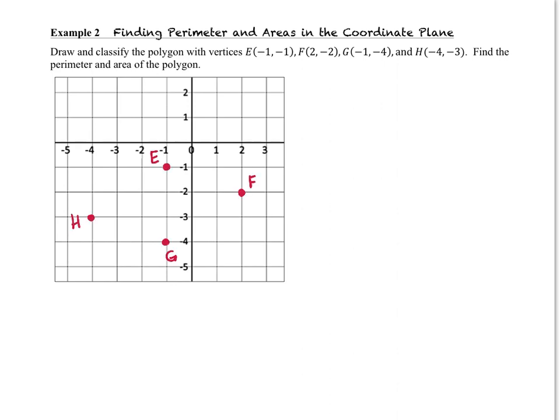Now that we've got the points, draw segments between them. Now that we've got our figure drawn, we can check out the type of figure that it is because we need to draw and classify the polygon. And we see that there are two pairs of parallel sides, meaning that segment HE has a slope of 2 over 3, and GF also has a slope of 2 over 3. HG has a slope of 1 over 3, and EF also has a slope of 1 over 3. So when we have two pairs of parallel sides, we have a parallelogram.